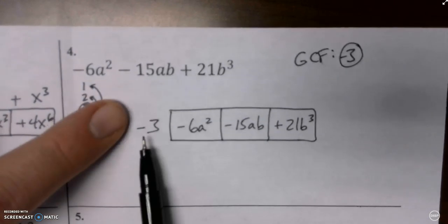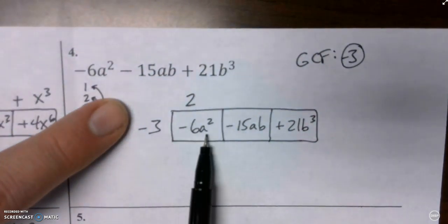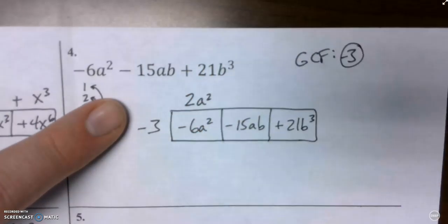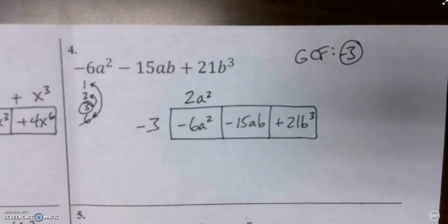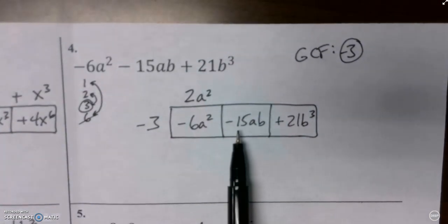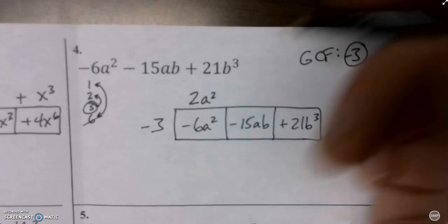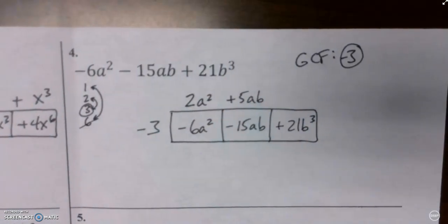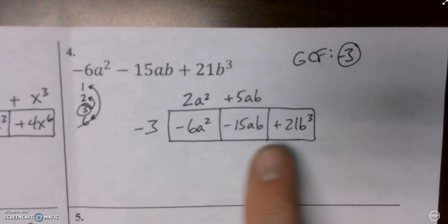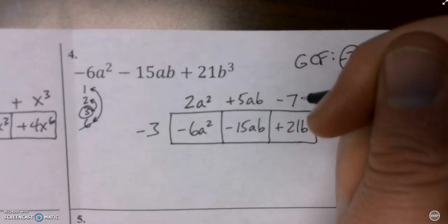So what could I multiply by negative three to get negative six A squared? Two seems like a good idea, because two times negative three is negative six, but I also need the A squared this time, don't I? And a quick check, two A squared times negative three would be negative six A squared. What do I need to multiply by negative three to get negative 15 AB? Positive five AB. Makes a lot of sense. And what do I need to multiply by negative three to get positive 21 B cubed? Yeah. How about negative seven B cubed?